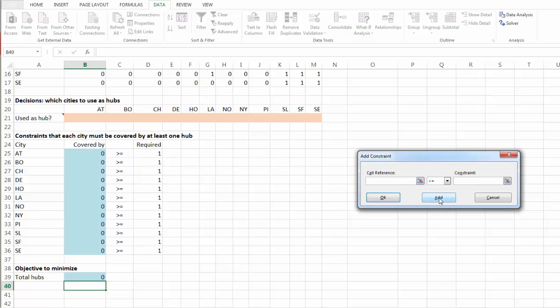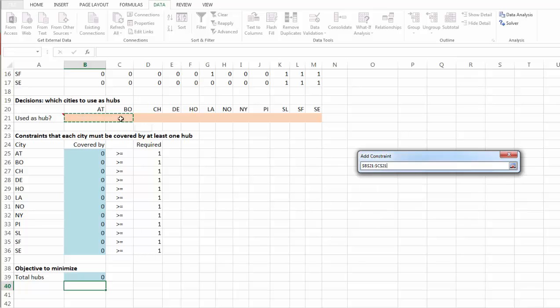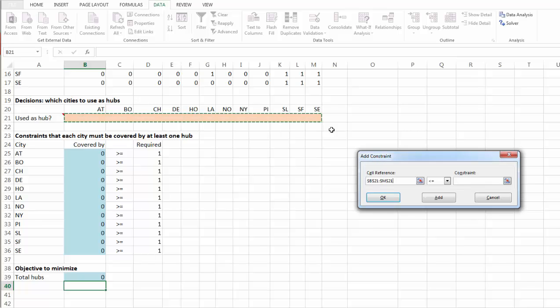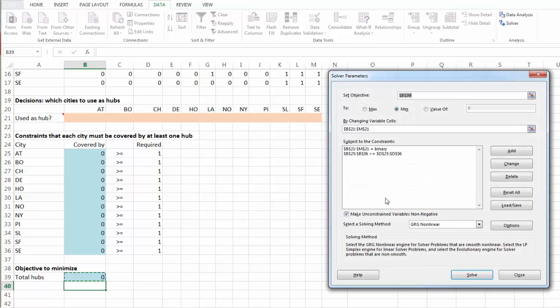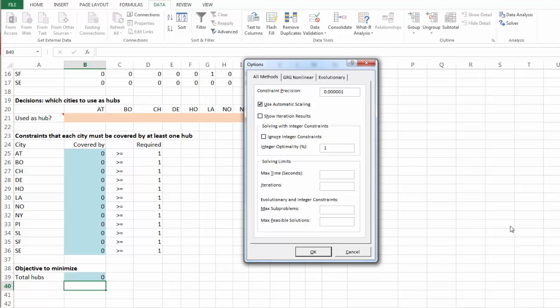Next, we would like to make sure all those decision variables are BIN binary. That's it. Click OK. Choose simplex LP. Take a look at options.